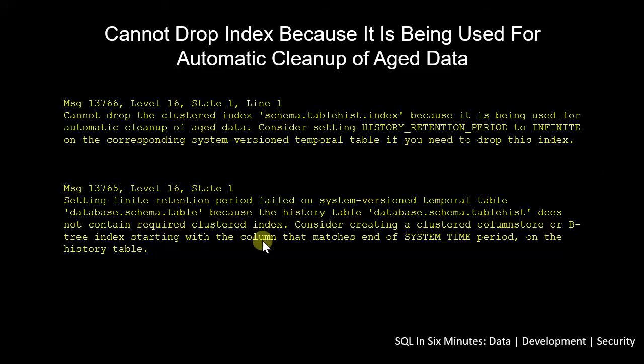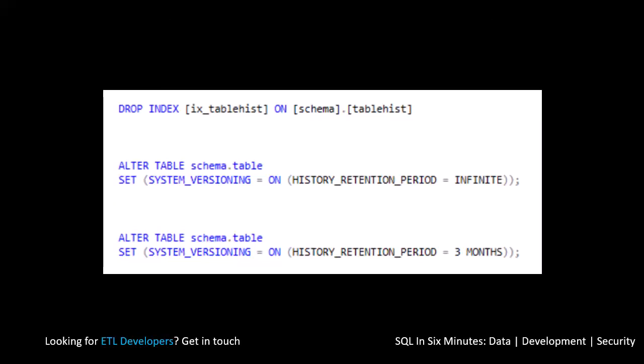To duplicate these errors: first, create a table with a temporal time-versioned table, then try to drop the index — you'll see the first error. Or, after setting it to infinite and dropping the index, try to set it back to a finite period — three months, six months, nine months, a year, whatever — and you'll see the second error.